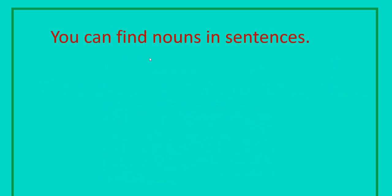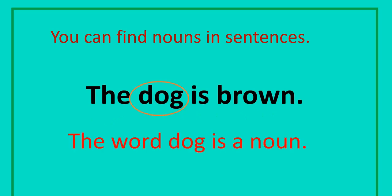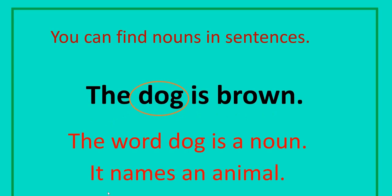You can find nouns in sentences. For example, the dog is brown. In this sentence, we have dog. So, the word dog is a noun. It names an animal.